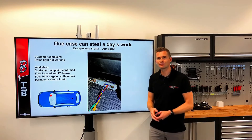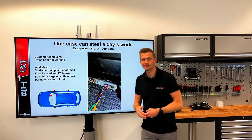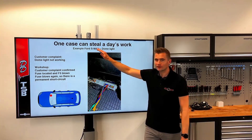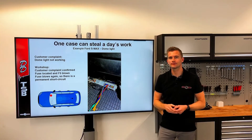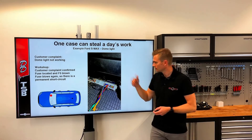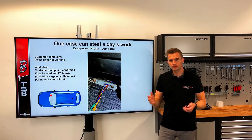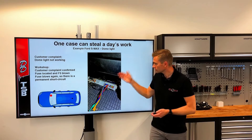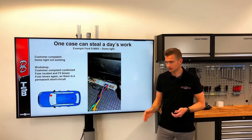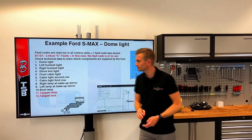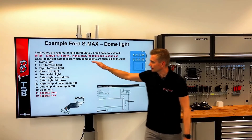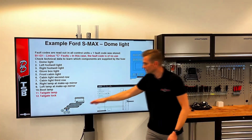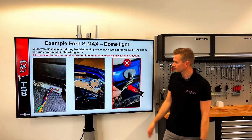Another example I saw the other day in a post: a customer had a Ford S-Max where the interior light didn't work. The first step was to check the fuse, and of course the fuse was blown — but there was a permanent short, so now the hunt began. There can be many things on the same fuse, so of course it can be a long way to track down a fault like this.